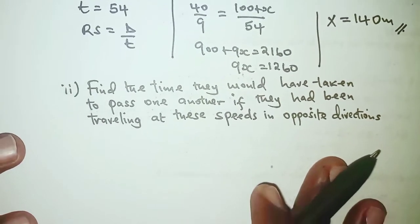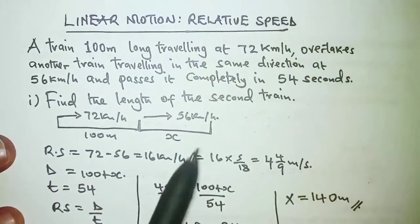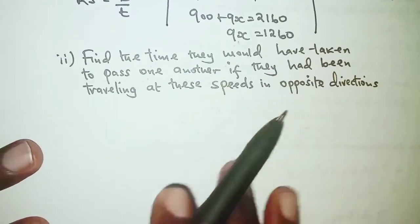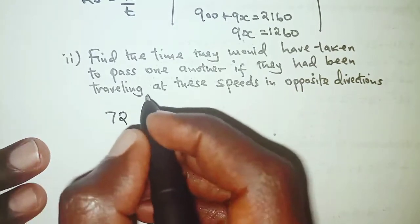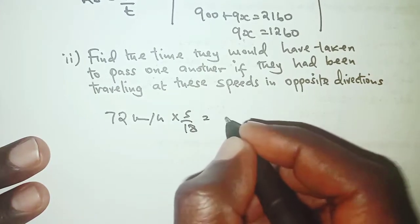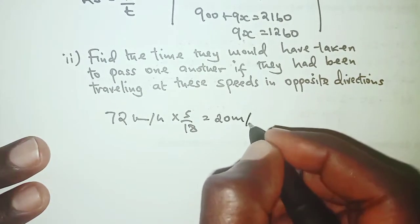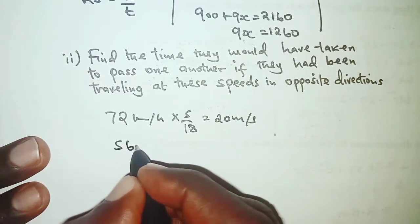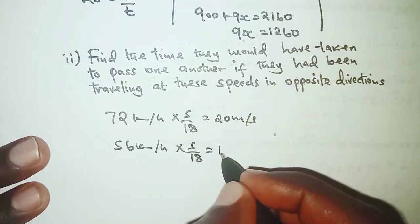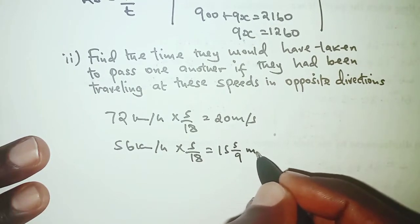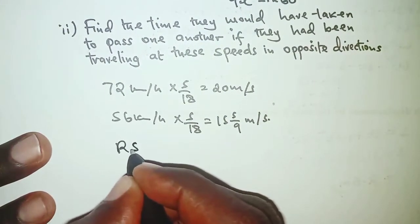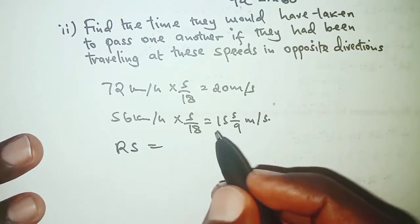First, let us express the speeds in meters per second. The speed of the first train: 72 kilometers per hour multiplied by 5 over 18 gives 20 meters per second. For the second train: 56 kilometers per hour multiplied by 5 over 18 gives 15 and 5 over 9 meters per second. With this we have the relative speed, because the two trains are now approaching each other moving in opposite directions.